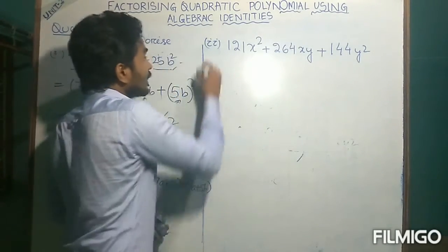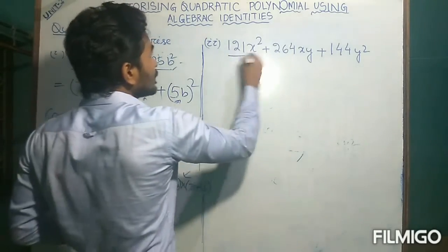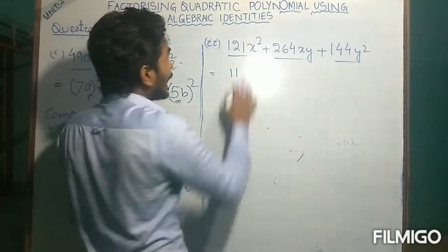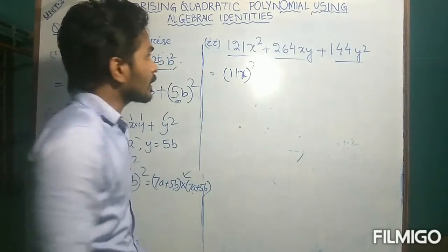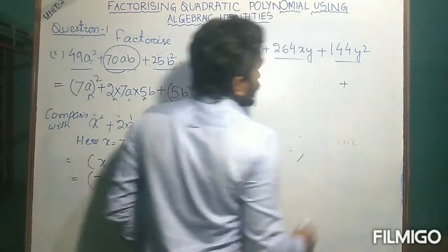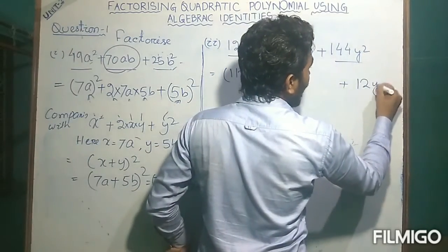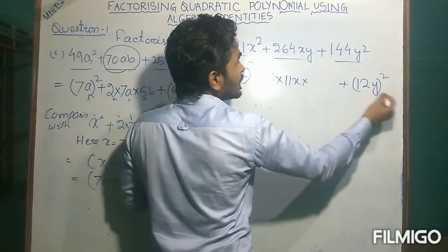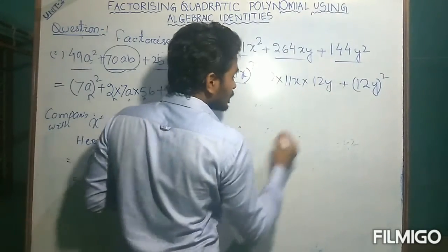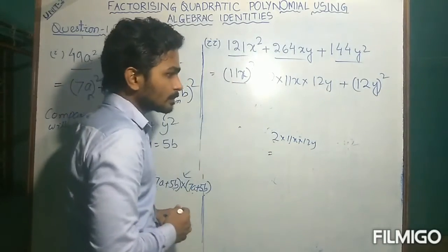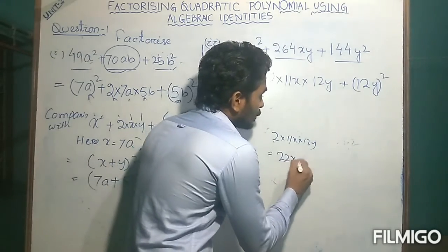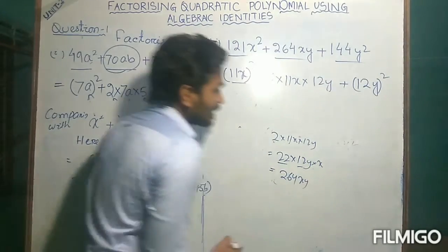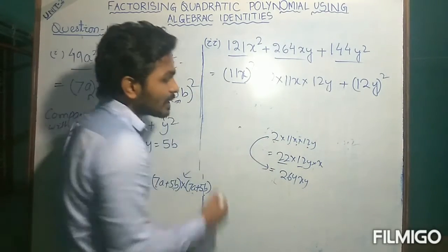Now let's do question number 2. It is a similar type of question. There are also 3 terms and we need to convert 121 to the square of a number. 121 is 11², and x² is x², so it can be written as (11x)². Now skipping the second term, the third term has 144, and 144 is (12y)². In the middle term we write 2 · 11x · 12y. Multiplying: 2 · 11 = 22, and 22 · 12 = 264, giving 264xy.